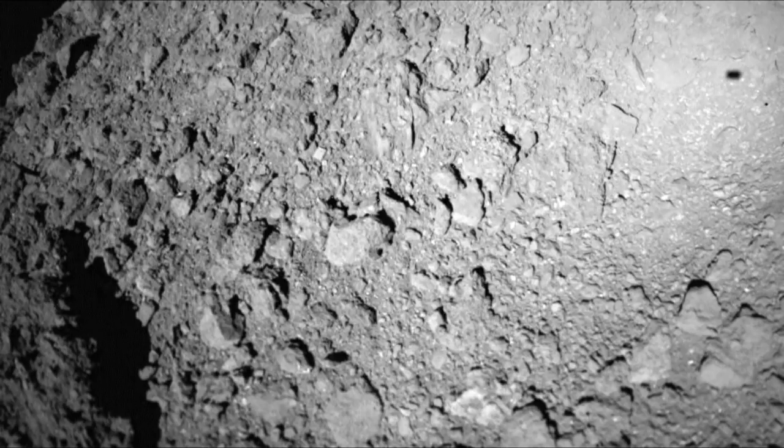Ryugu orbits the Sun in retrograde at a distance of between 0.96 and 1.41 astronomical units, with a Ryugu year lasting approximately 474 Earth days. By the way, an astronomical unit is the average distance between the Earth and the Sun, about 150 million kilometers, or 8.3 light minutes.